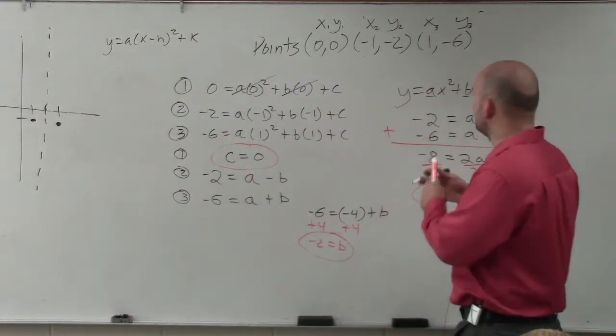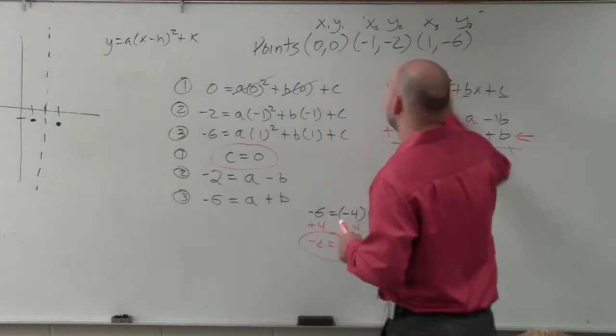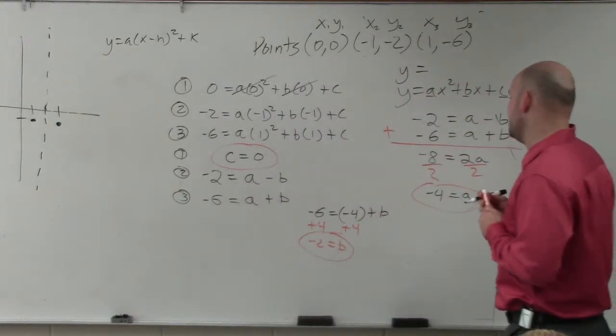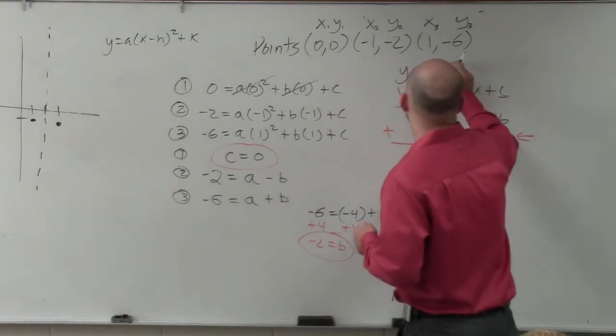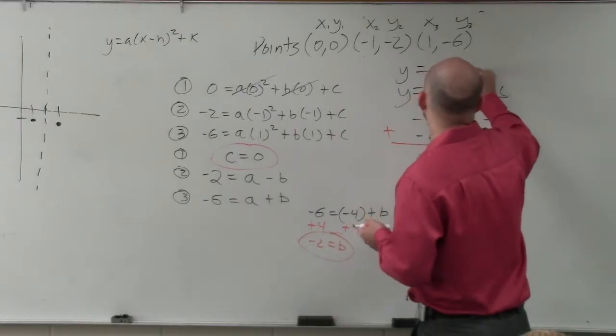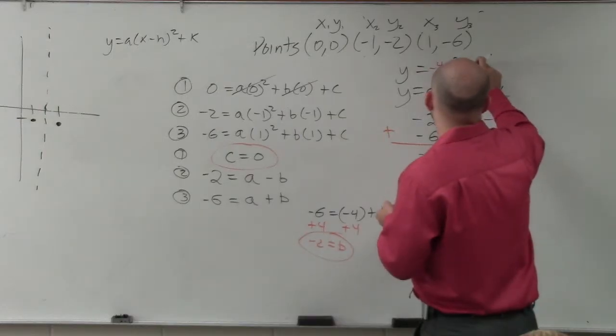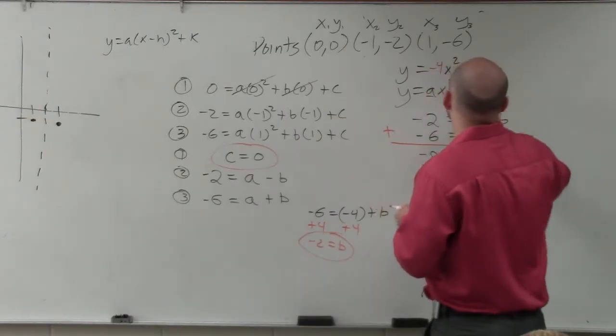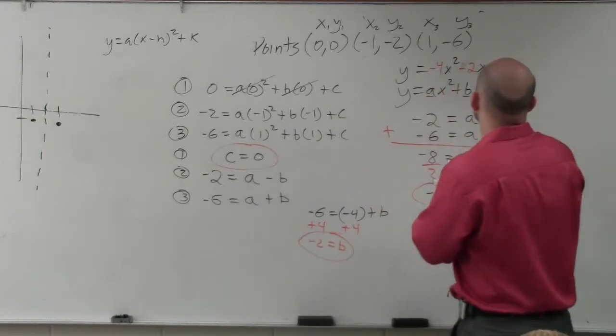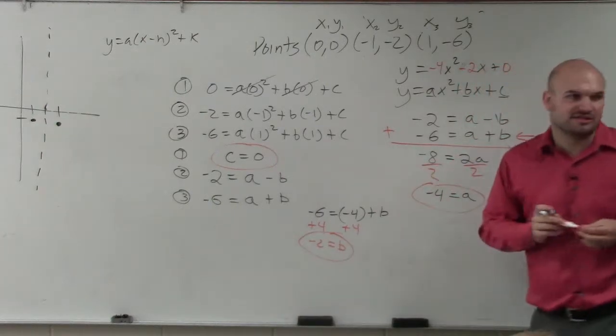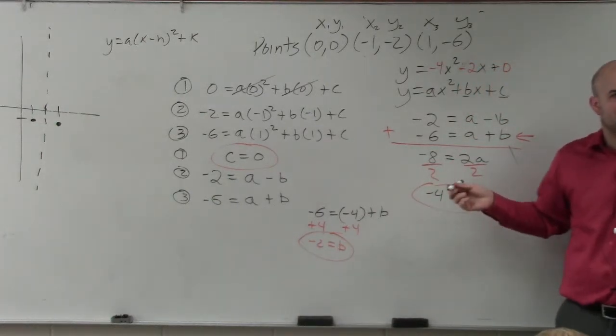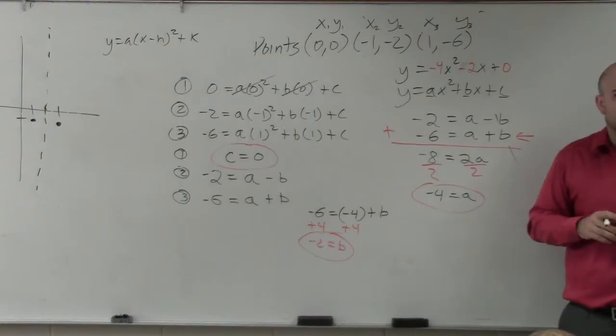I'm just going to plug them in for this. So my final equation in standard form is y equals negative 4x squared plus, or sorry, minus, because it's a plus and negative, minus 2x, and then plus 0, which you don't really need to include the plus 0. But I just want to make sure you guys all understand the a, b, and c. Yes?